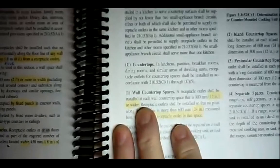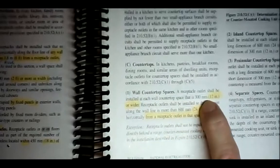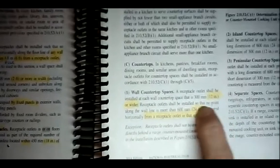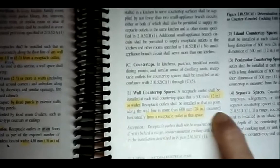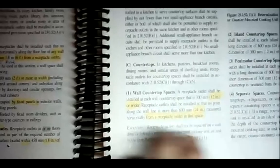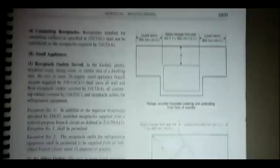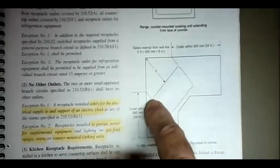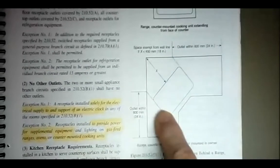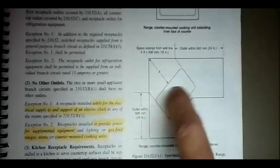A receptacle outlet shall be installed at each wall countertop space wider than 12 inches. Receptacle outlets shall be installed so that no point along the wall line is more than 24 inches — measured horizontally — from a receptacle. That's every four feet in the kitchen. Any wall space 12 inches or greater counts. You wouldn't put any behind a sink or a cooktop — they don't want you plugging in and reaching across a sink or a cooktop.